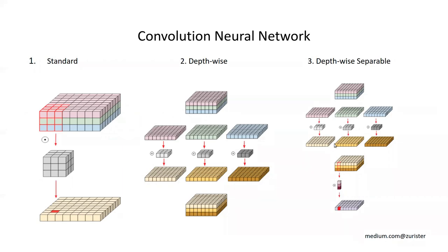Depth-wise separable convolution factorizes a regular convolution into a depth-wise convolution and a 1×1 convolution called a point-wise convolution. This was initially introduced for generic object classification and later used in the inception model to reduce computation in the first few layers.